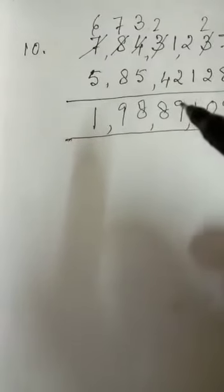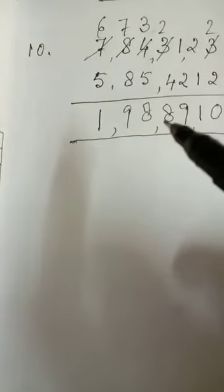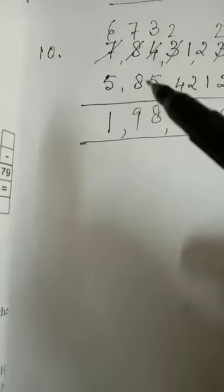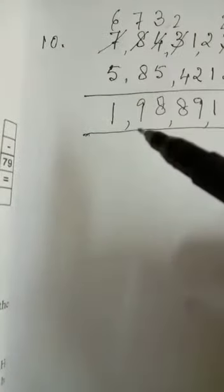Again, 1 is smaller than 2. Again, you borrow 1 from here. So, ultimately, you get here, 11 minus 2 is equal to 9. Then, here again, borrow 1. So, 12 minus 4 is equal to 8. Then, 13 minus 5 is equal to 8. Here again, you have to borrow. So, ultimately, 17 minus 8 is equal to 9. And then, at last, 6 minus 5 is equal to 1.